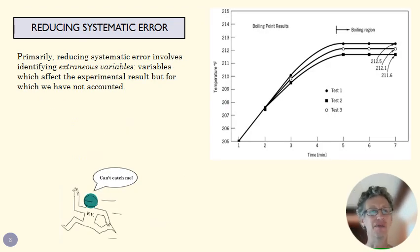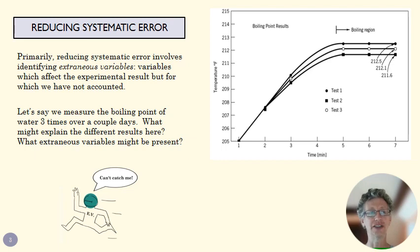All right. So how do we identify extraneous variables? Well, it's really just about paying attention to what you're doing. So imagine that we were trying to figure out the boiling point of water, and we measured this over three different days. And each day we consistently found these different values. The boiling point of water isn't changing. And so you might have to just sort of dig into this.